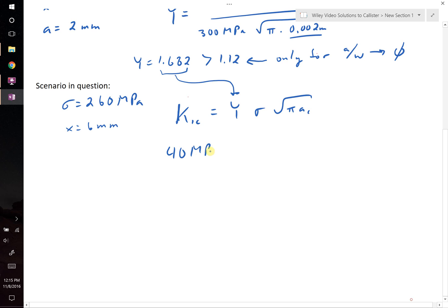So, 40 MPa root meters equals 1.682 times our applied stress multiplied by the square root of pi times our critical crack length. This will allow us to solve for the critical crack length and compare it to the flaw that's present in our material.